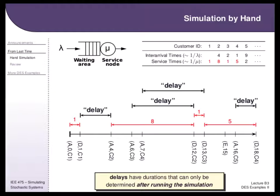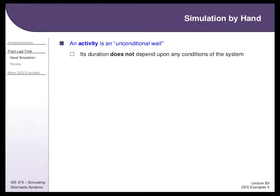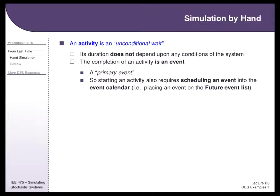Delays of duration can only be determined after running the simulation. An activity is an unconditional wait — its duration does not depend upon the system state. A completion of an activity is called a primary event. Whenever you start an activity, you must schedule the end of that activity, which means you must add something to the Future Event List. If you start an activity and don't schedule its end, that activity is never going to end.